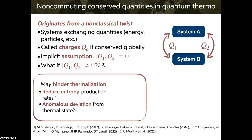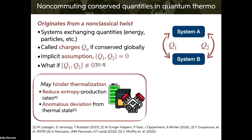So why would we care? If we can hinder thermalization — if we can resist the arrow of time — then we could potentially leverage that for longer lasting quantum memories or batteries. Reducing entropy production rates may also have prospects for quantum heat engines and the efficiency of those at maximum power.